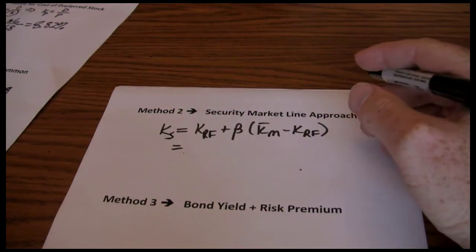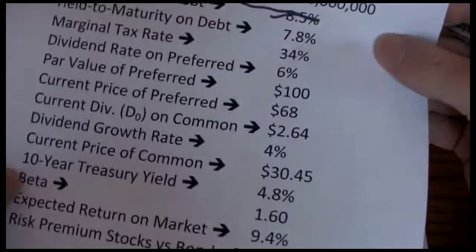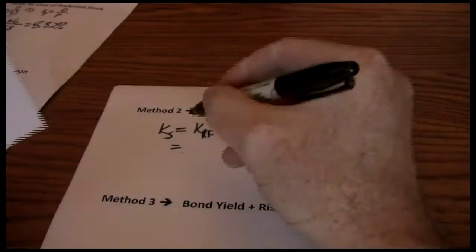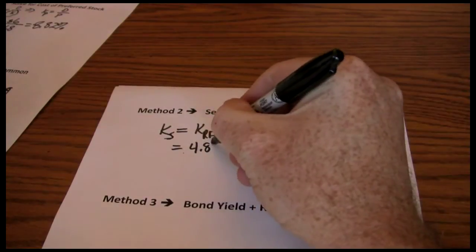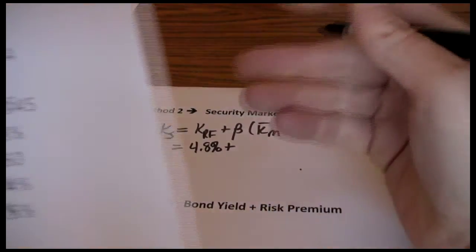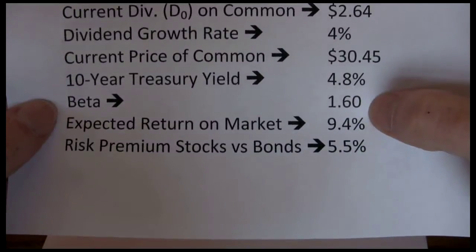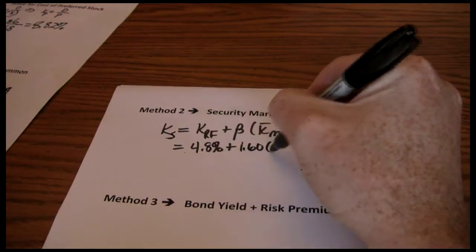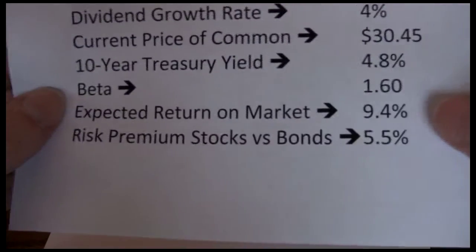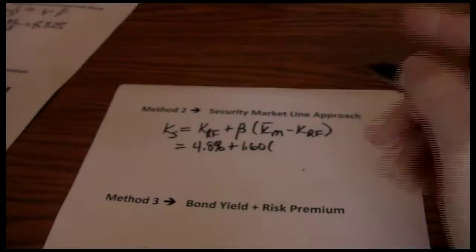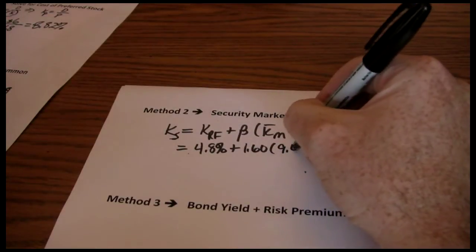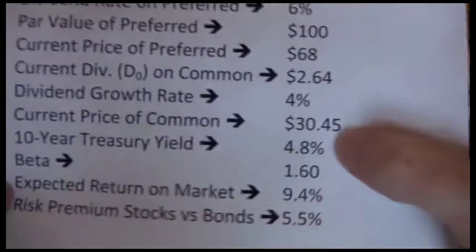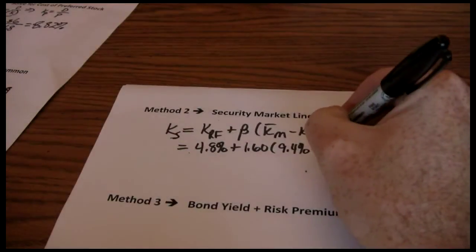Now the risk-free rate, we approximate with the 10-year treasury yield, so we see that as 4.8%. Beta is given as 1.6%. Expected return on the market is given as 9.4%. And the risk-free rate again, it's just that 10-year treasury yield at 4.8%.